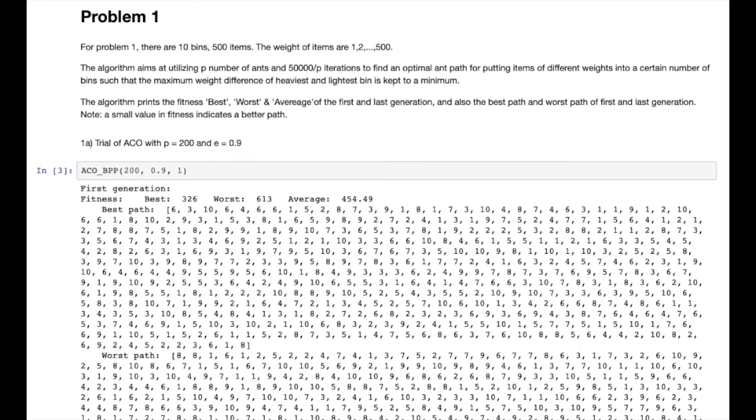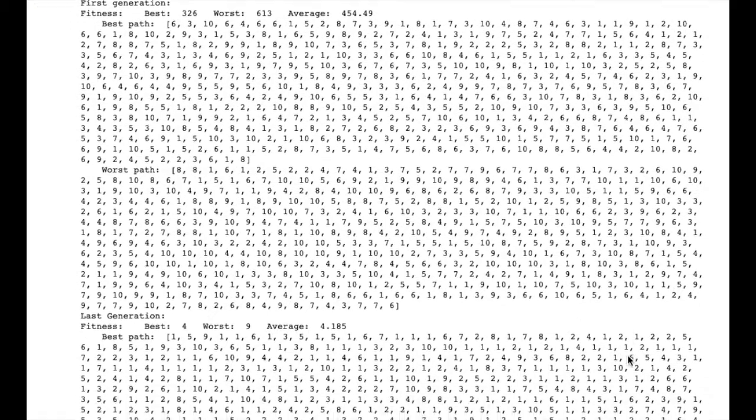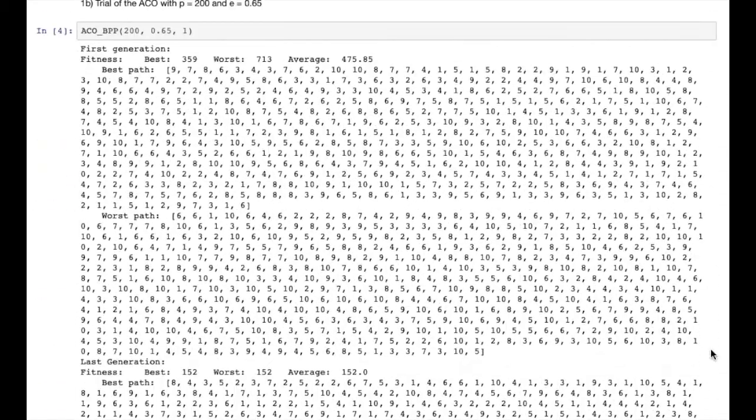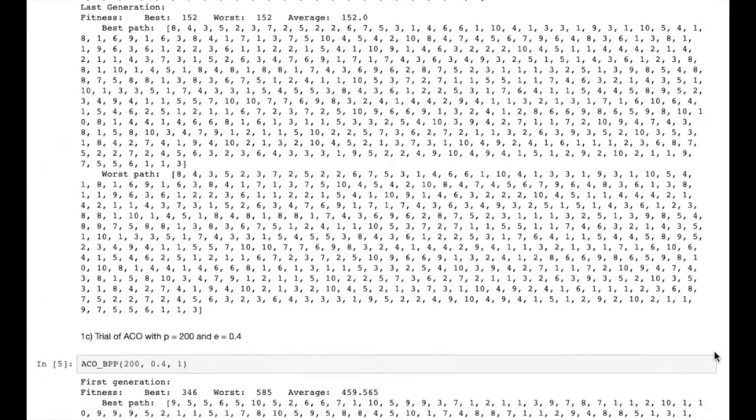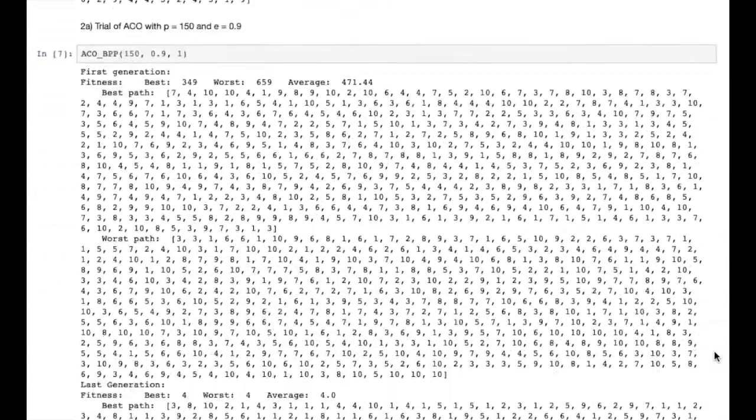This is a detailed description of problem 1. The algorithm aims at finding the optimum path for putting items of different weights into a certain number of bins such that the maximum weight difference between the heaviest bin and the lightest bin is kept to a minimum.